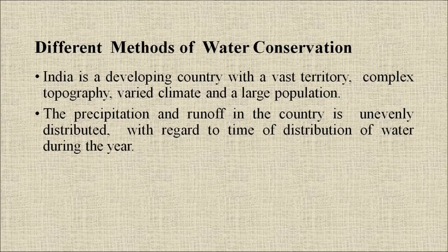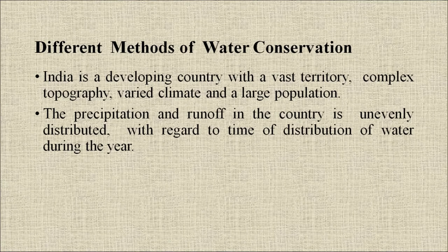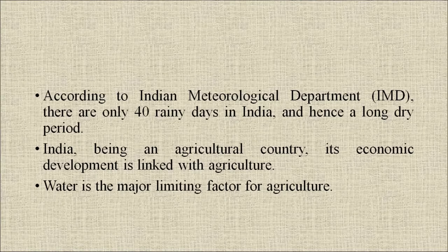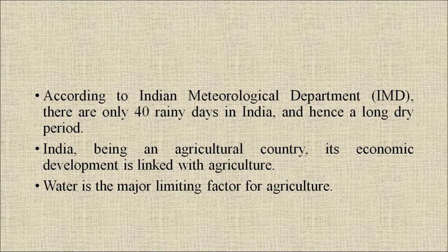The different methods of water conservation: India is a developing country with a vast territory, complex topography, varied climate, and a large population. Precipitation and runoff in the country is unevenly distributed with regard to time. According to the Indian Meteorological Department, there are only 40 rainy days in India and hence a long dry period. India being an agricultural country, its economic development is linked with agriculture, and water is the major limiting factor.